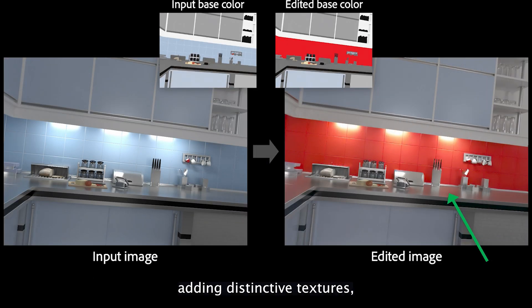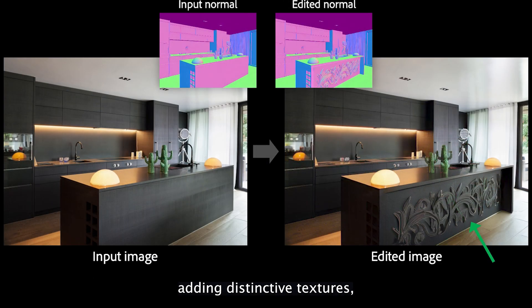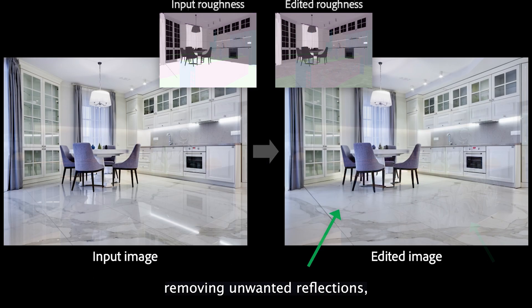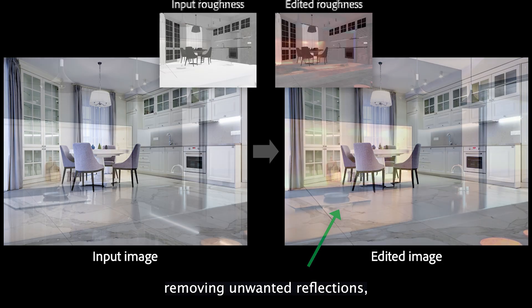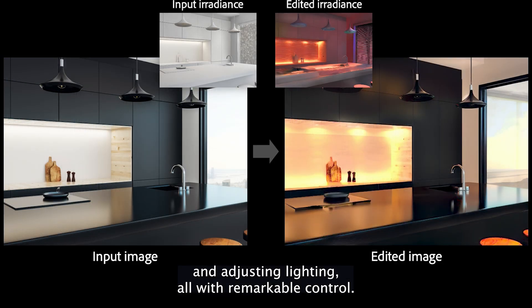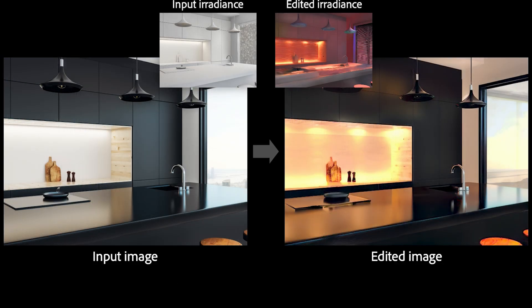Here are just some examples of what it can do: changing colors, adding distinctive textures, removing unwanted reflections, and adjusting lighting — all with remarkable control.